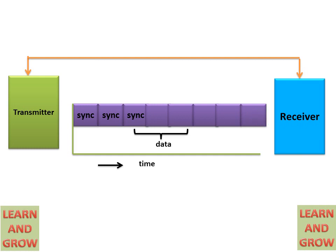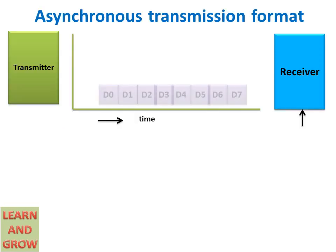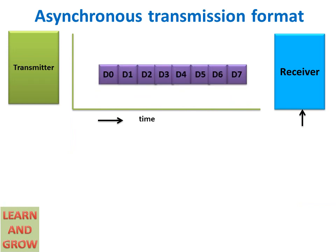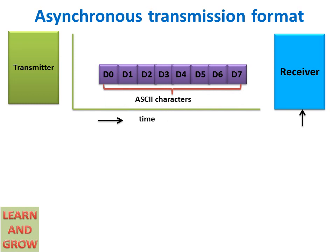Synchronous transmission is generally used for high-speed transmission at 20 kilobytes per second or more. In asynchronous transmission format, a total of 11 bits are used: 8 bits represent the character data, one stop bit, and one start bit. If the receiver stays high — logic 1 — that state is called mark, and if it is logic 0, it is called space.